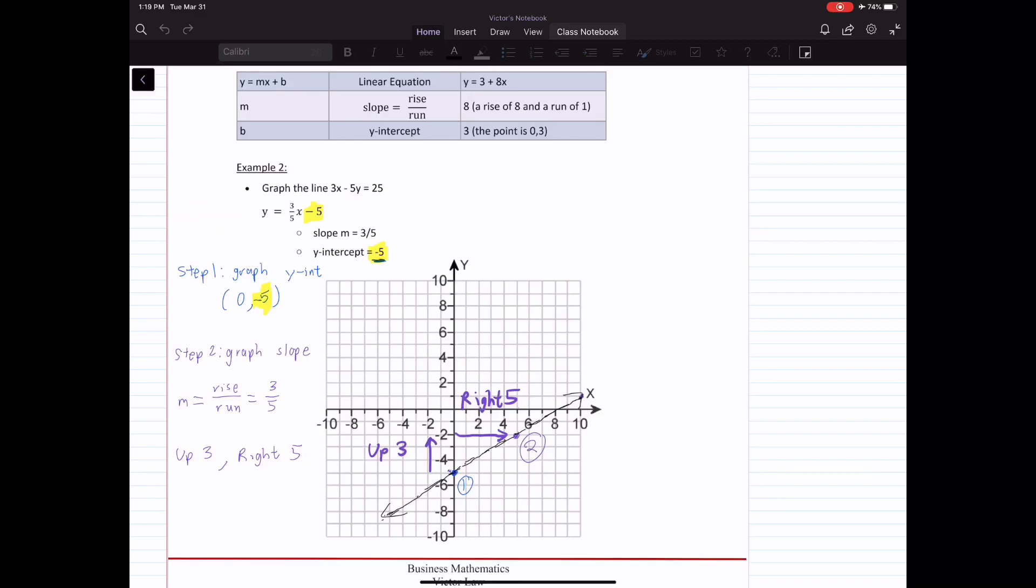The slope represents that for every increase in x by 5, the y value will increase by 3. Once we understand what the equation y equals mx plus b is, we can start graphing it. When we're graphing, the first thing we graph is the y-intercept. Y-intercept is your coordinate 0 comma negative 5, which is shown in the graph.